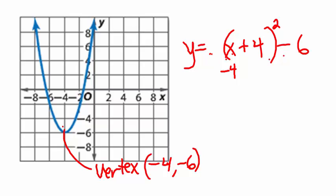go back to your vertex and find another point that's easy to identify on the graph. Looks to me like that one's pretty easy to identify.